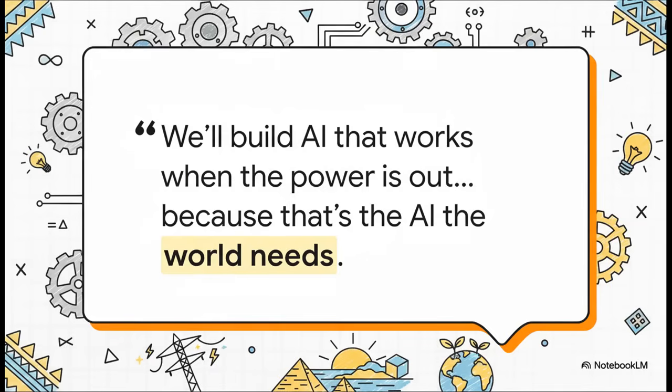Zippo, the engineer, just nails it with this quote. The goal is to build AI for the world as it actually is, not as we wish it would be. Because an AI that can thrive under tough constraints is an AI that can thrive absolutely anywhere. That's the AI the whole world really needs.